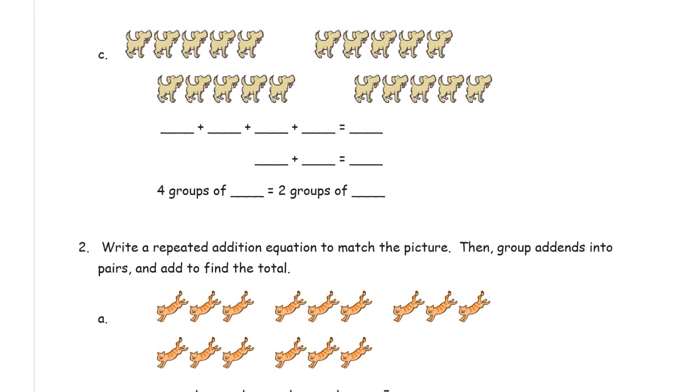And now we've got dogs. And it looks like we have one, two, three, four, five in each group. And there's four of them. So we need five plus five plus five plus five. And we're combining these so that these two fives here, you don't have to draw those lines, but those two fives make this ten. And these two fives make this ten. Ten plus ten is twenty.